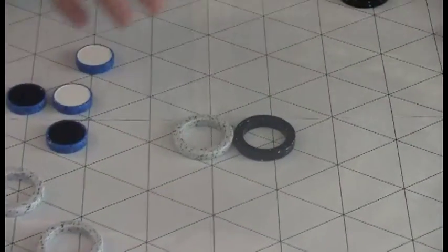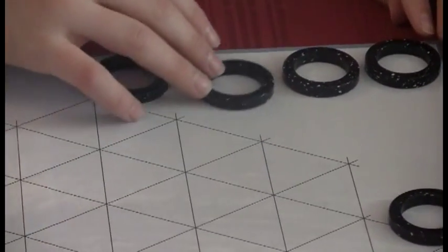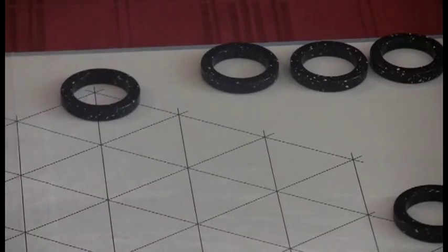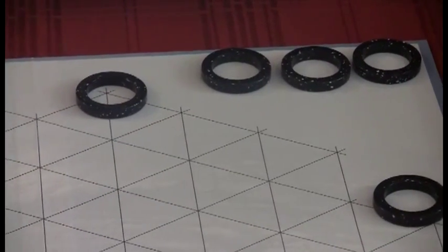The objective of Yinch is to get three of your rings to the side of the board before the other person gets their tiles to the side. Okay. And how do you do that?